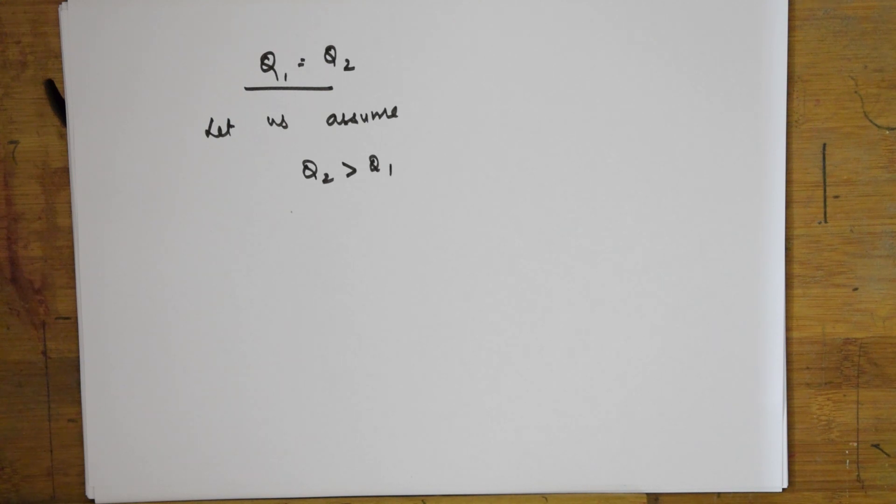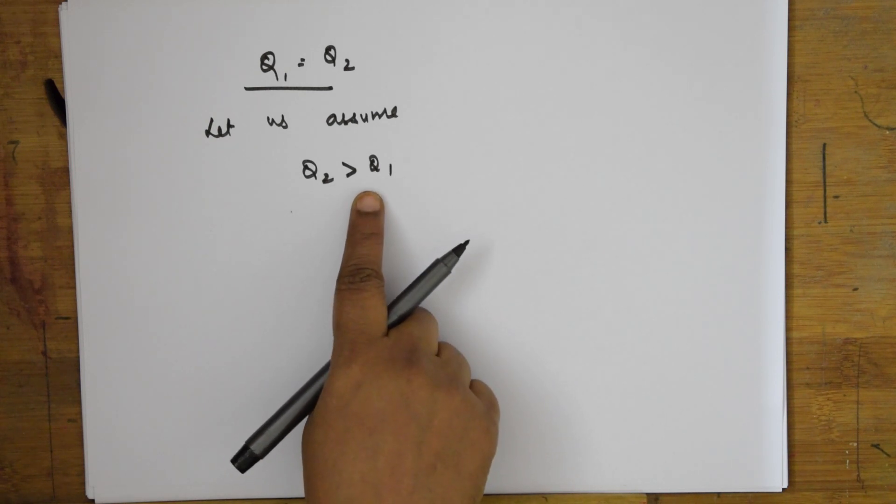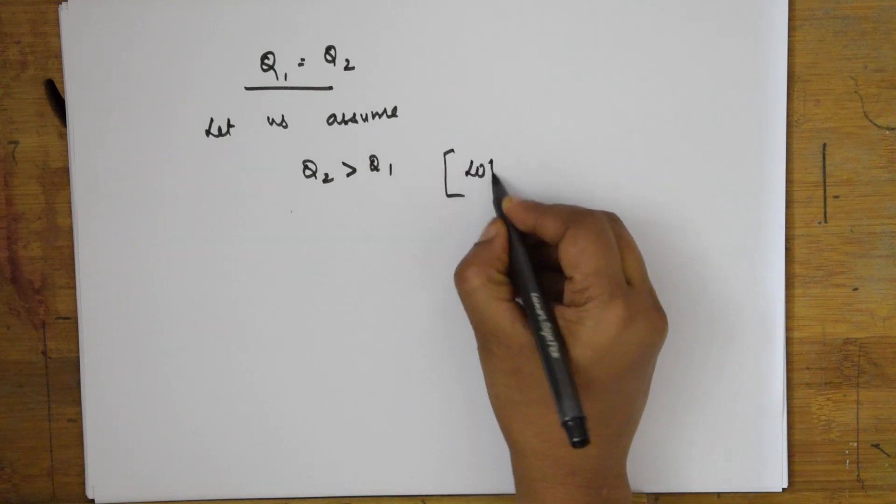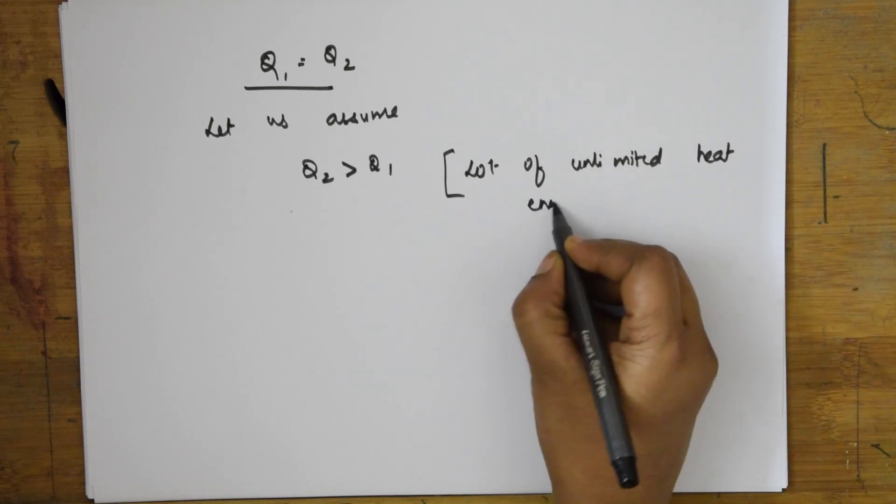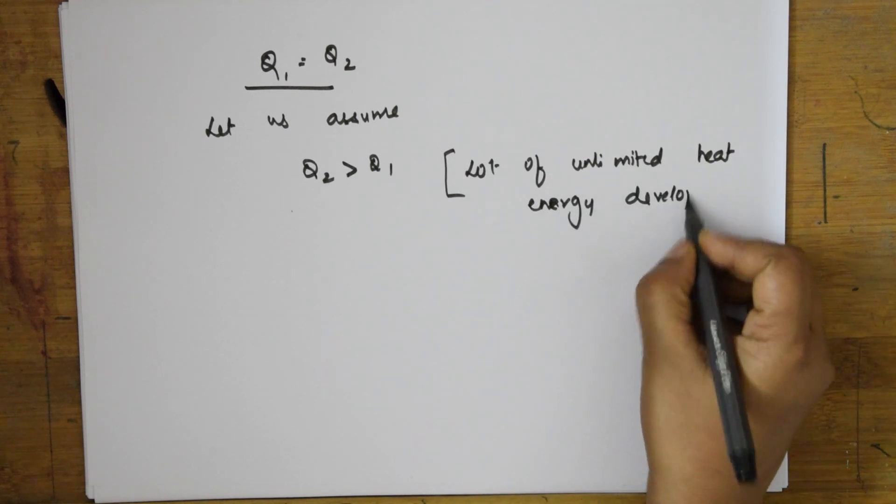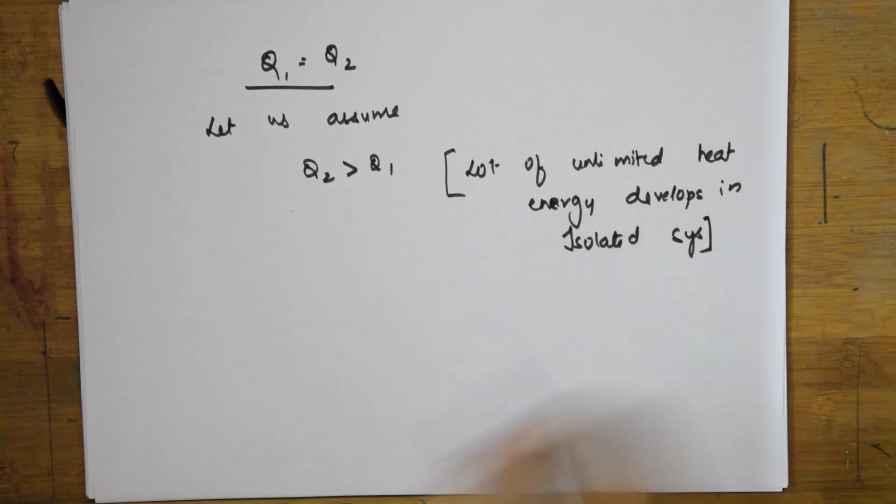This will go against the first law of thermodynamics. We said this follows the first law, but when this condition applies, it will violate the first law. Hence, Q1 must equal Q2. If unlimited heat energy develops in an isolated system, this is against the first law of thermodynamics.